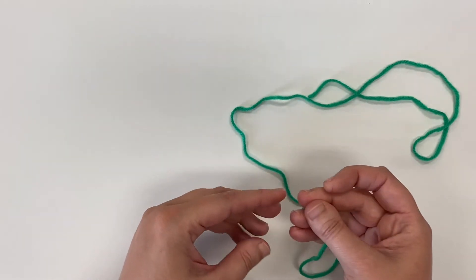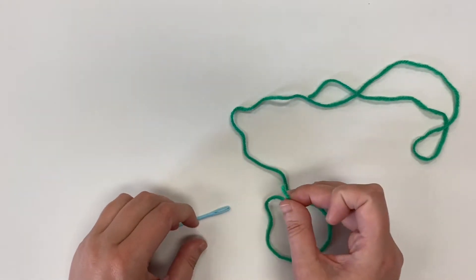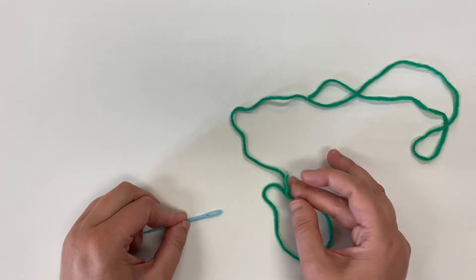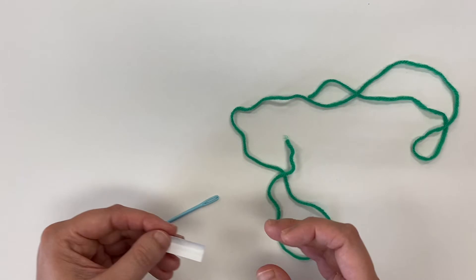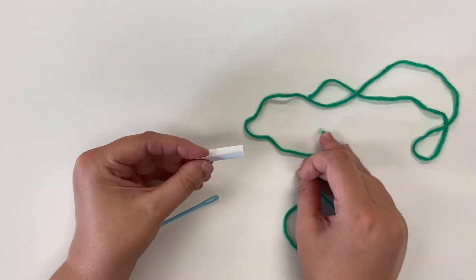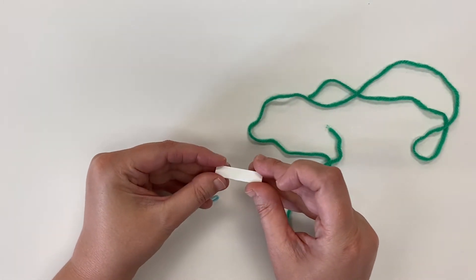If we tried to put the yarn directly into the beads it would be kind of frustrating. It would take a really long time. I have a special trick for threading needles. You're going to take this little piece of paper that's folded in half. I like to call it a hot dog bun.